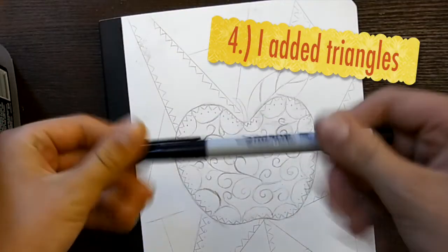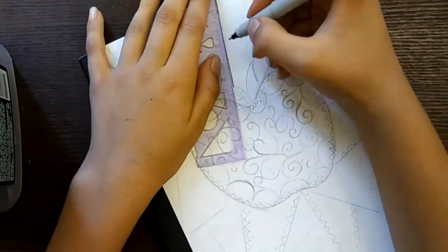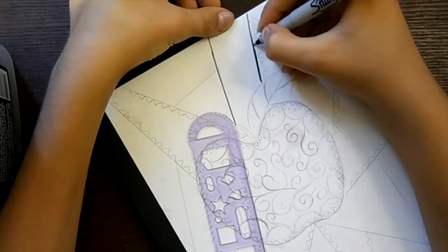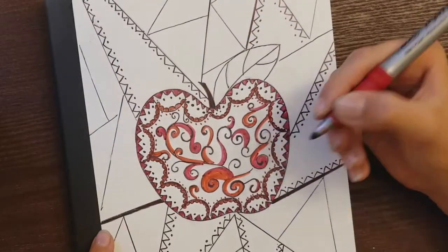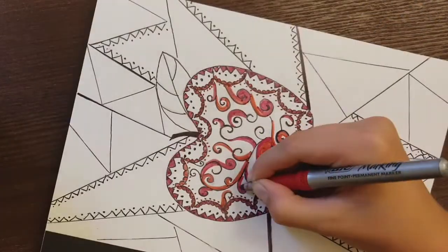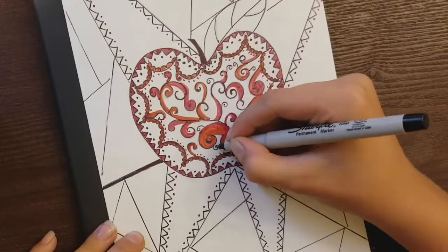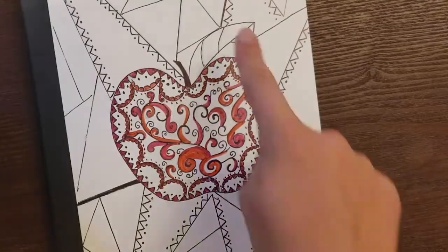Then outline everything with the sharpie. Now you'll need sharpie markers so they wouldn't come off when you rub them. Color the swirls inside of the apple red and some orange. You want to have a full apple, so have as many swirls as you need. I added more.